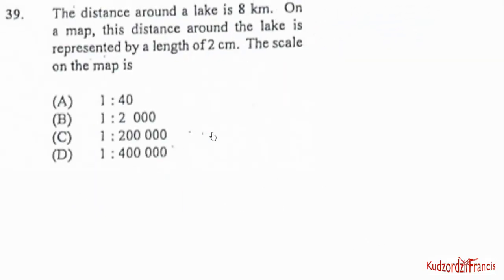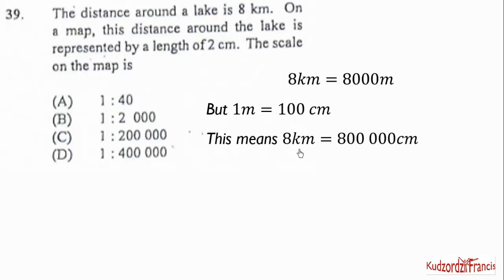Question 39. The distance around a lake is 8 km on a map. This distance around the lake is represented by the length of 2 cm. The scale on the map is 8 km is 8,000 meters. But also we know that 1 meter is 100 cm. So this means that 8 km will be 100 times 8,000, which is 800,000 cm.